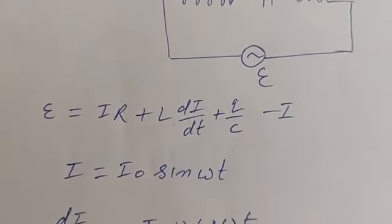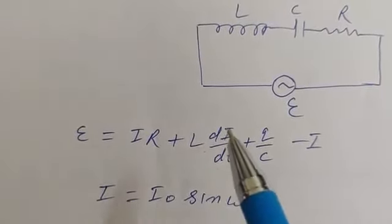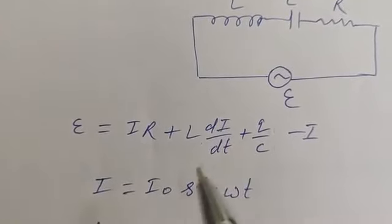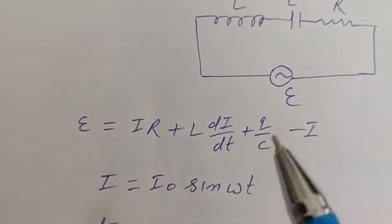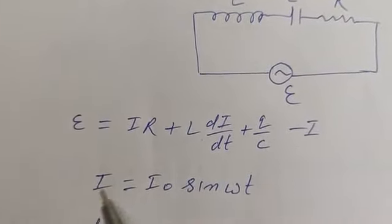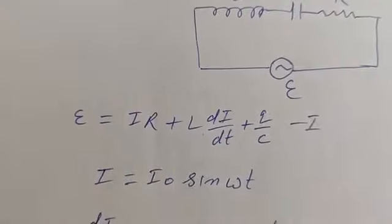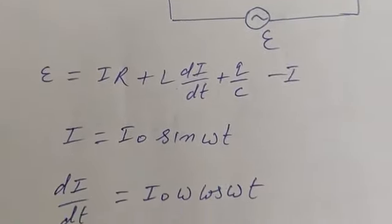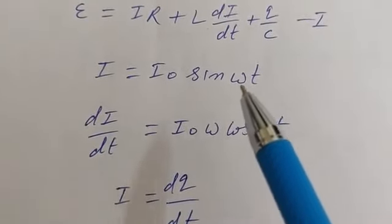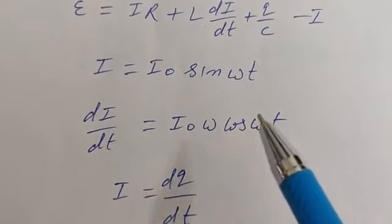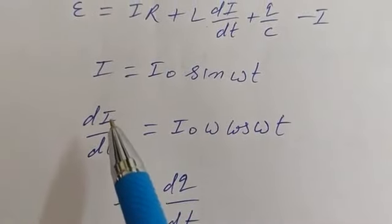Suppose current I equals I₀ sin(ωt) is flowing through the circuit. From this expression, we find dI/dt by differentiating: the differentiation of sin(ωt) is cos(ωt), and the differentiation of ωt gives a factor of ω. So dI/dt equals I₀ω cos(ωt).